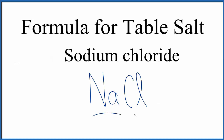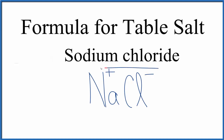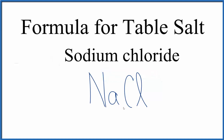Because sodium is a metal and chlorine is a non-metal, we have to take the charges into consideration. Sodium on the periodic table is in group 1 and has a 1+ charge. Chlorine is in group 17, sometimes called 7A, and has a 1− charge. Since these two charges balance out, the formula for sodium chloride, or table salt, is NaCl.